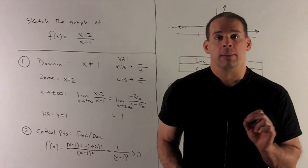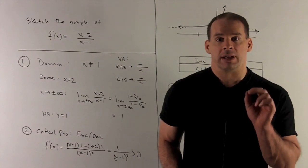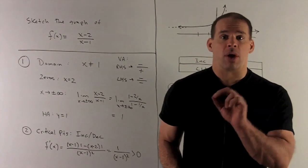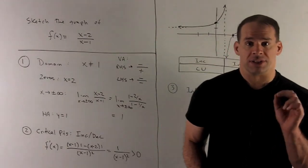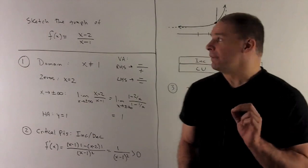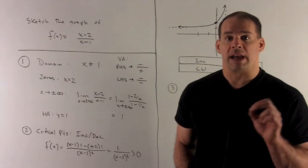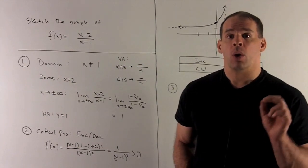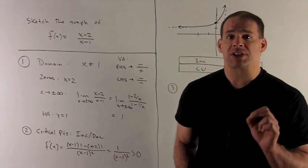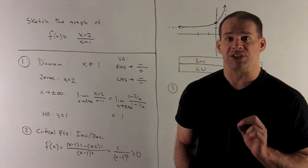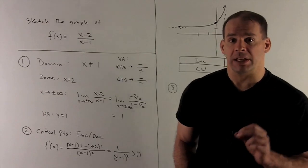Then I have to worry about behavior as I let x go off to plus infinity and minus infinity. As I go off to plus or minus infinity, behavior's going to be the same. I have (x-2)/(x-1). I can divide top and bottom by x. So I'll have (1 - 2/x)/(1 - 1/x). As x goes to plus or minus infinity, 2/x and 1/x are going to go down to zero. So the limit's just going to be 1/1, which is equal to 1.